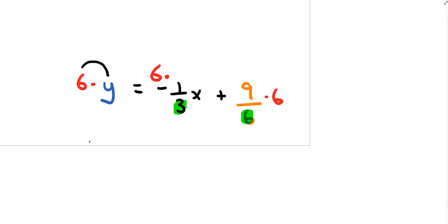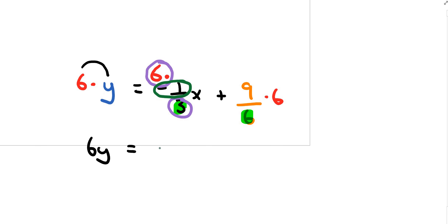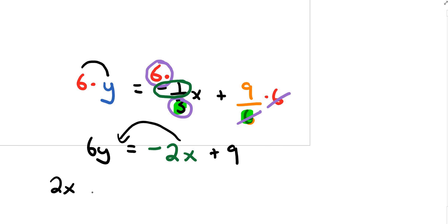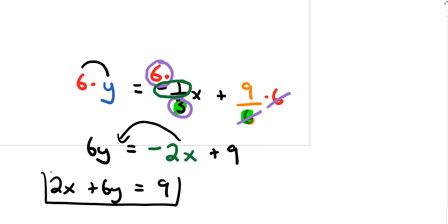6 divided by 3 is 2, and 2 times negative 1 is negative 2, giving negative 2x. The 6s on the constant cancel, leaving plus 9. Moving negative 2x to the other side gives positive 2x, so the final answer is 2x plus 6y equals 9. That concludes this homework video guide from section 5.3.